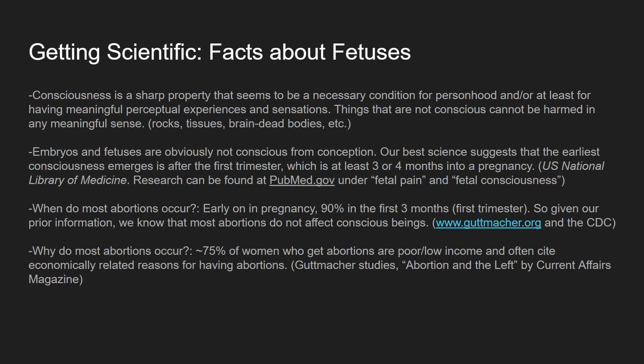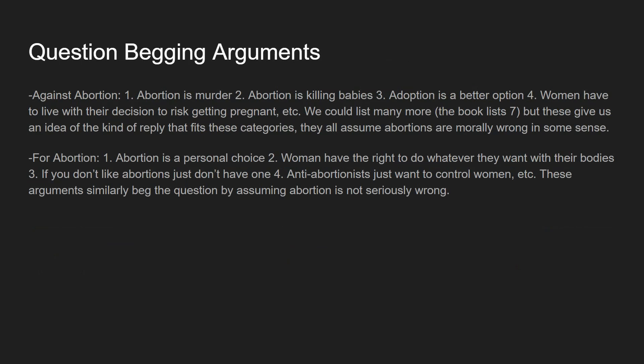Why do most abortions occur is also an interesting question. Roughly 75% of women who get abortions are from poor or low-income backgrounds, and they often cite economically related reasons — going to school, working, too much stress. There are Guttmacher studies on this. There's also an article called 'Abortion and the Left' by Current Affairs Magazine that goes through this information and the statistics as well.